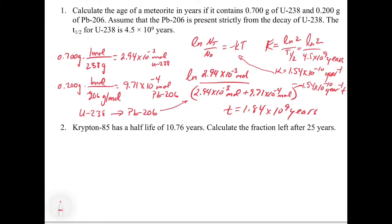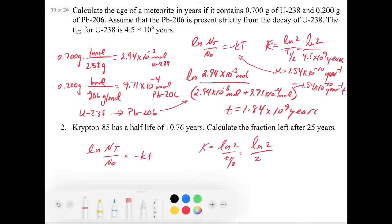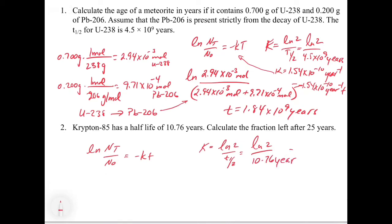The key point with rocks and mineral problems is understanding that the sum of the number of atoms of the parent and daughter isotopes gives you back the original amount. The next problem: krypton-85 has a half-life of 10.76 years — calculate the fraction left after 25 years. Again, using ln(N_t / N_0) = −kt, we first get k = ln(2) / 10.76 years = 0.0644 years⁻¹.